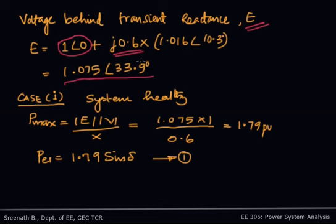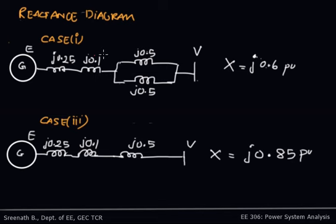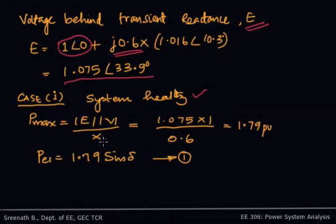Now for Case 1, when the system is healthy: Pmax = EV/X, where E = 1.075, V = 1, and X = 0.6. The reactance between E and V is 0.25 + 0.25 + 0.1 + 0.25 (resultant of the parallel lines) = 0.6 total. So EV/X = 1.79, and the electrical power equation for a healthy condition is Pe1 = 1.79 sin δ.